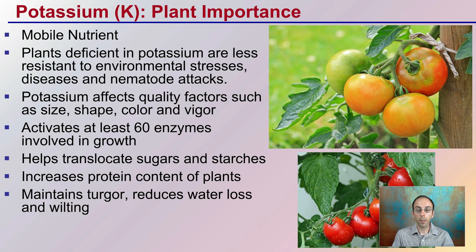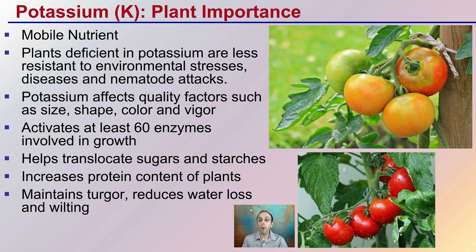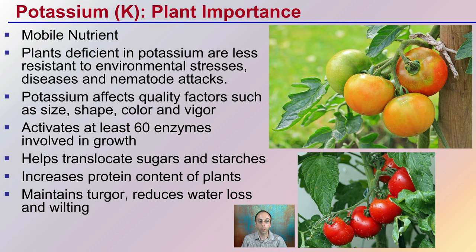First off, potassium — what does it do? Why do plants need it? Keep in mind that it is a mobile nutrient, so plants can move or translocate it through the plant. Plants deficient in potassium tend to be less resistant to environmental stresses, diseases, and nematode attacks. This is why it's important for growers to make sure their plants are not becoming potassium deficient.